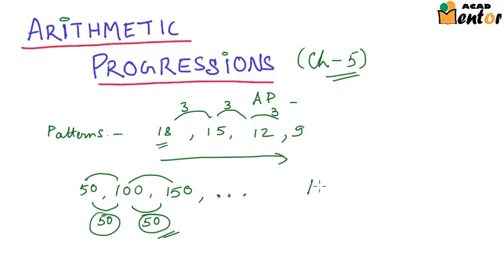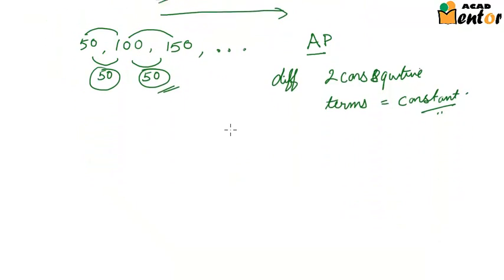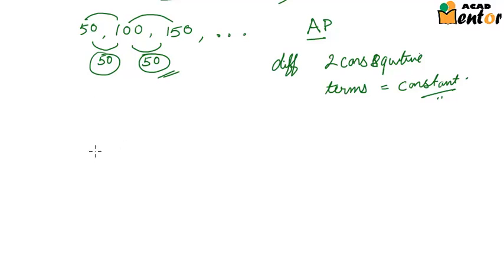So, in short, an AP or an arithmetic progression is nothing but a series where the difference between two consecutive terms is constant. Now this constant difference between any two consecutive terms of an AP is called the common difference. We usually denote the common difference by the letter small d.